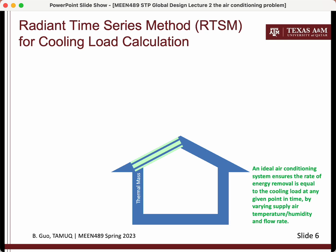The cooling load is time-dependent, so the ideal air conditioning system should be able to track a time-dependent rate of energy removal, though practically this is not possible. To provide space cooling, the air conditioning system causes airflow through the conditioned space. At the inlet the air is cool and dry — this is called the supply air. As the air flows through the conditioned space it gets warmer and more humid as heat is transferred from surfaces and water vapor is added. The air leaves with a higher energy content and is called the return air.